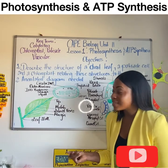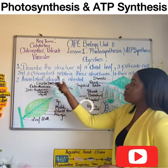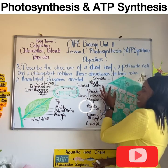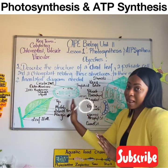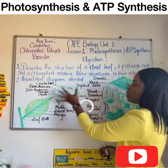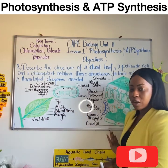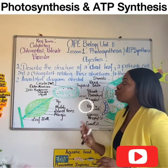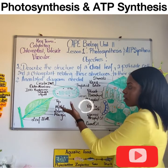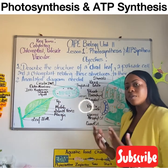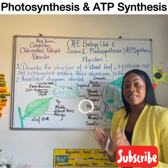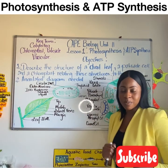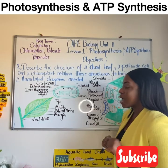We have completed Objective 1, covering the structure of a dicot leaf, a palisade cell, and a chloroplast and relating these structures to their functions. Next, I'll be conducting a virtual lab for the construction of these organelles as shown under a microscope. Thanks for watching — remember to like, share, and subscribe to keep the movement going.